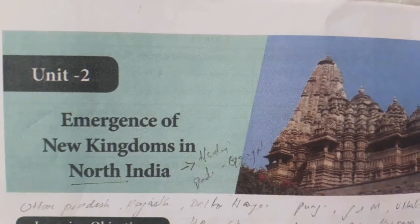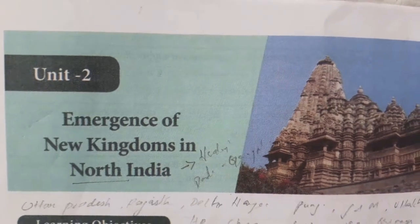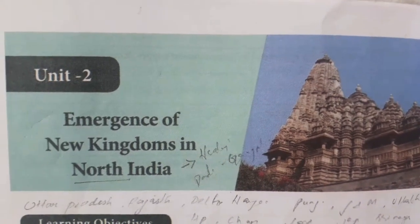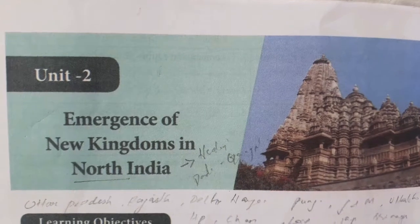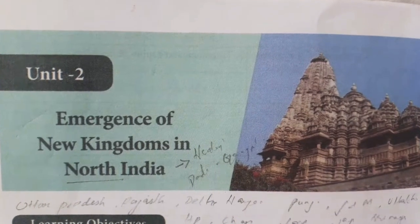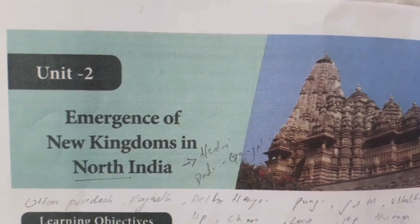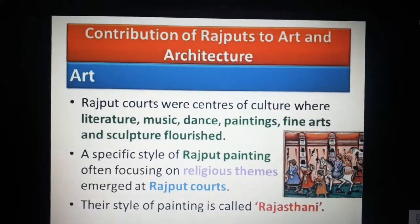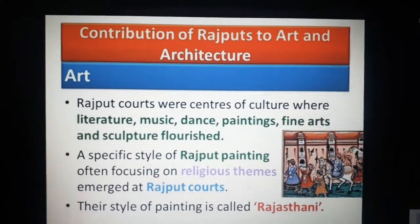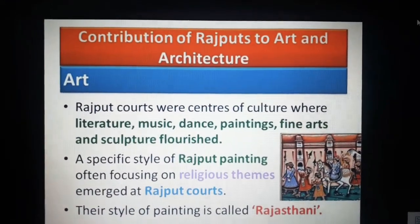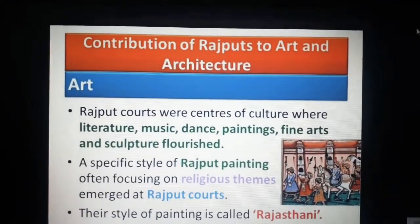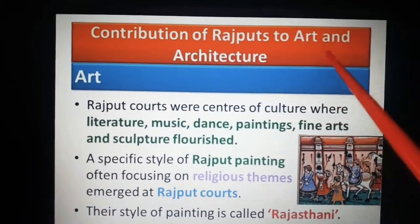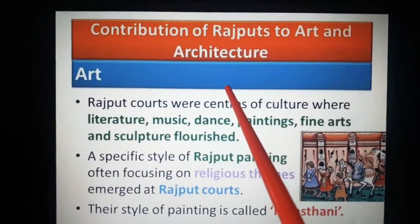Hi students, welcome back to the social science online class. Today we are going to see about unit 2: emergence of new kingdoms in art. In this session we are going to know about the contribution of Rajputs to art and architecture.